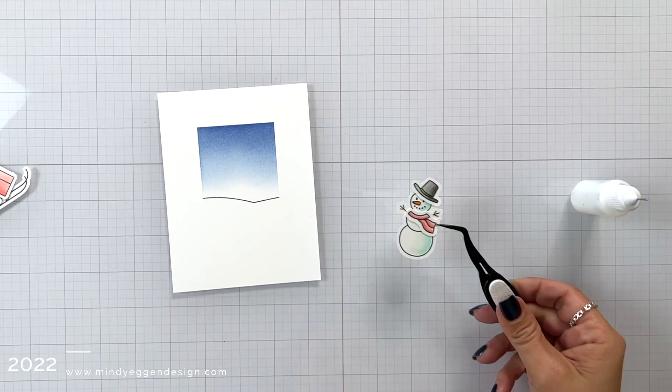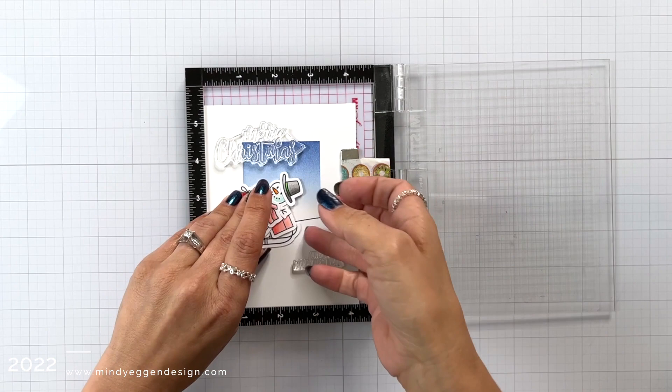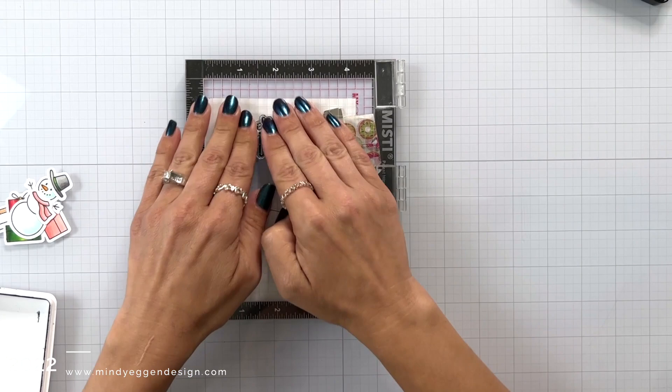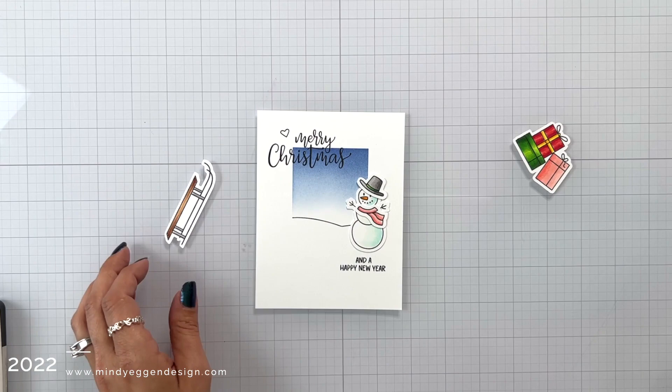To help set up my scene, I'm going to go ahead and attach the hat and the scarf using my liquid glue that I have in this fine-tip bottle and also my tweezers. So I placed this in my MISTI, lined up that sled with the presents and the snowman, and figured out where I wanted these sentiments to be, and I'm going to stamp them in the intense black ink. Now these sentiments are included on that stamp set.